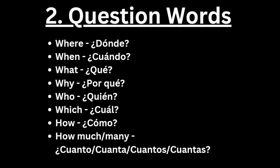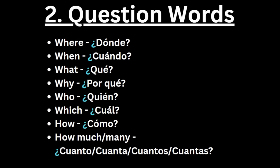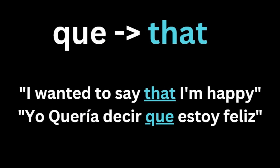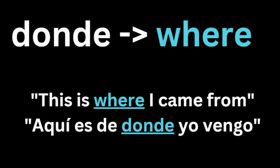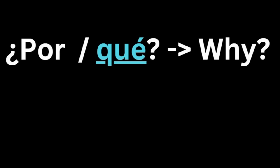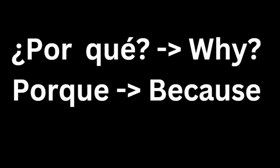The question words in Spanish: where is dónde, when is cuándo, what is qué, why is por qué, who is quién, which is cuál, how is cómo, and how much or how many is cuánto, cuánta, cuántos, cuántas. Whenever you write a question with them, you must put an upside-down question mark at the beginning. If you see these words with accents, they are used as literal questions. Without accents, 'que' can mean 'that' and 'donde' can mean 'where' as a location. Also, 'por qué' means why, while combined as 'porque' it means because.